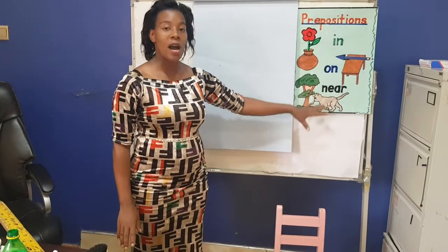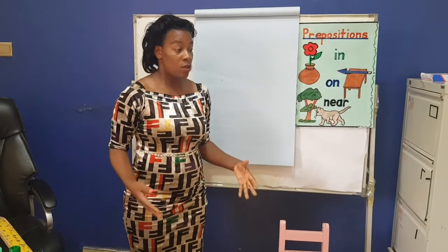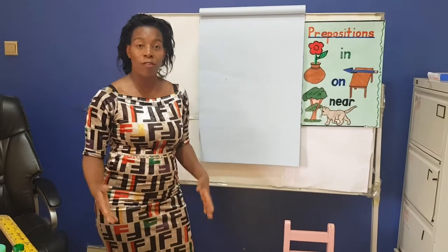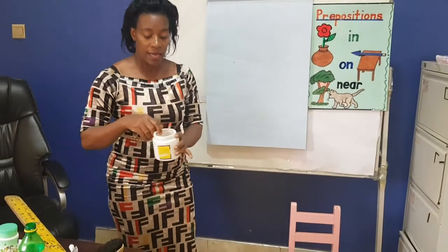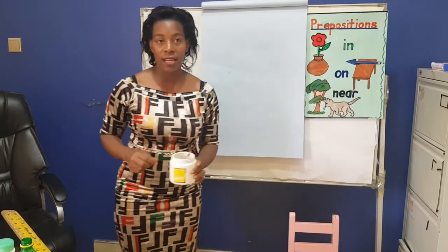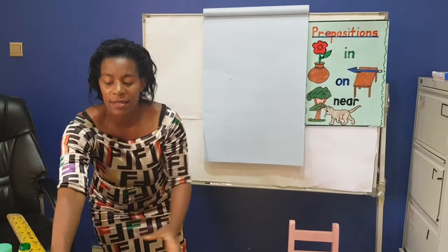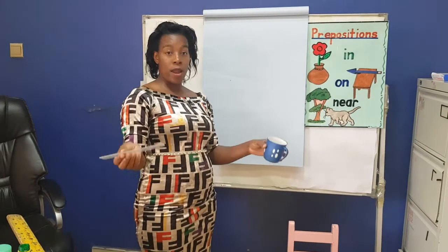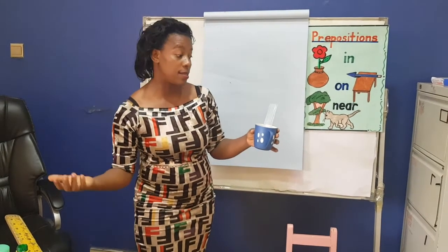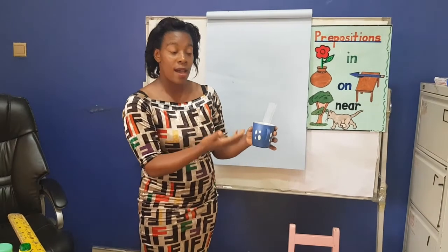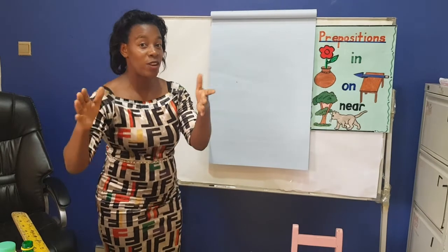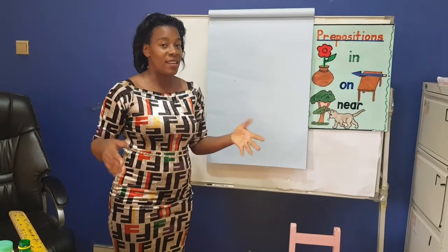All those ones are our prepositions. Do it at home — get something, put it in the pot if you have a pot. If you have a tin, put something in it — maybe a pen, maybe a stick. Put it in a cup and tell Mummy, come and see — the lula is in the cup. Thank you very much. If you do it at home, it will be fine. Bye-bye.